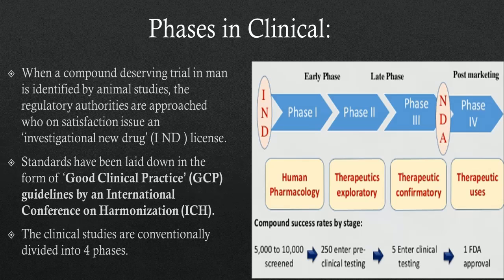The drug is formulated into a suitable dosage form and clinical trials are conducted in a logical phased manner. The clinical studies are conventionally divided into four phases. To minimize any risk, initially few subjects receive the drug under close supervision. Later, larger numbers are treated with only relevant monitoring.